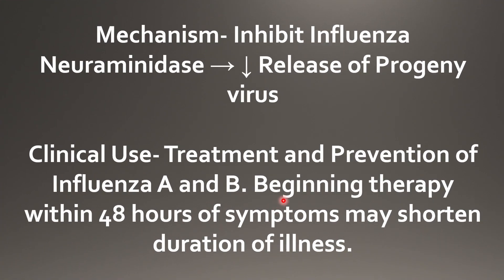Here is our first flashcard — oseltamivir and zanamivir. It inhibits influenza neuraminidase, as we discussed earlier, hence decreasing the release of progeny virus. It is used in the treatment and prevention of influenza A and B, and for shortening the duration of illness if therapy is begun within 48 hours of symptom onset.